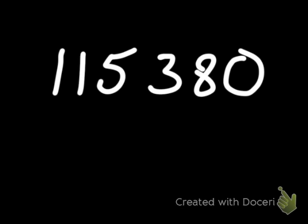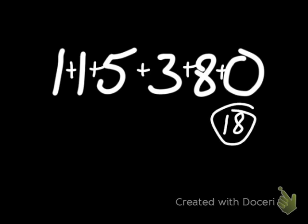Let's now look at the divisibility rule for the number 9. 9 is very similar to 3 — we add up all the digits, and if the sum is divisible by 9, then the entire number is divisible by 9. Let's take a look at 115,380. I add up all the digits: 1 plus 1 is 2, plus 5 is 7, plus 3 is 10, plus 8 is 18, plus 0 is 18. Does 9 go into 18? Yes, it does. So 9 will also go into 115,380.